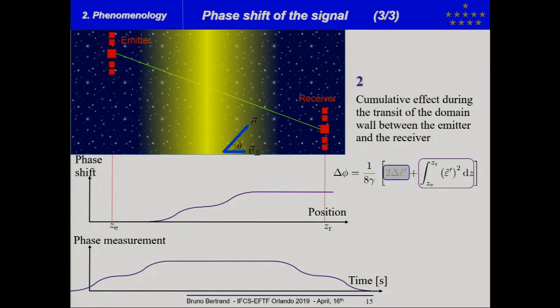Then, you have a second effect. In this case, the effect is cumulative. So, you will measure a phase perturbation at the level of the receiver during all the transit of the domain wall between the emitter and the receiver.